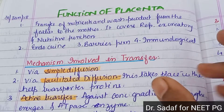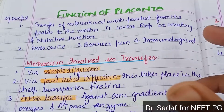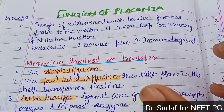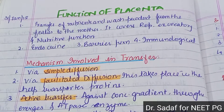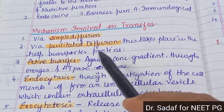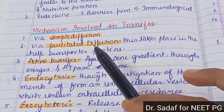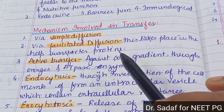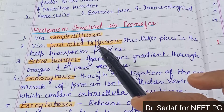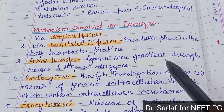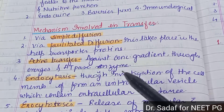We will discuss how the respiratory function works and what the endocrine function is. We will explain the mechanism of transfer — what material is transferred via the placenta. Transfer can occur via simple diffusion, or via facilitated diffusion, which takes place with the help of a transporter protein. Active transfer works against the concentration gradient, through energy and ATPase enzyme.